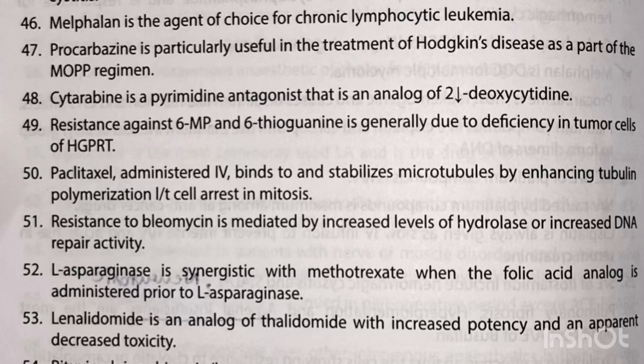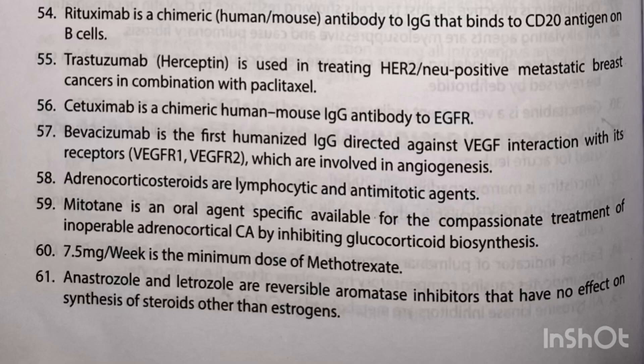Lenalidomide is an analog of thalidomide with increased potency and apparently decreased toxicity. Rituximab is a chimeric antibody. Bevacizumab is the first humanized IgG directed against VEGF and its receptors, which are involved in angiogenesis. Corticosteroids are lymphocytic and anti-mitotic agents.